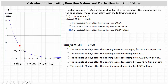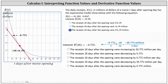For the second part, we want to interpret the derivative function value r prime of 28 equals negative 0.772. Every derivative function value represents the slope of a tangent line as well as an instantaneous rate of change. If we sketch the tangent line at the point where t equals 28, the slope equals negative 0.772. Writing this as a fraction with denominator of 1 and including units — revenue r is in millions of dollars and t is in days — negative 0.772 represents negative 0.772 million dollars per day. This is the instantaneous rate of change of the daily receipts 28 days after opening.